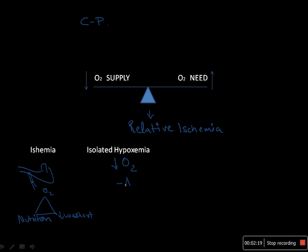In isolated hypoxemia, there is only a decrease in oxygen. This can be seen in anemia, where the oxygen-carrying capacity of the blood is decreased, and in chronic lung diseases, where oxygen carried by the blood is decreased. That is why ischemia is more dangerous than isolated hypoxemia — ischemia causes deprivation of all three factors, whereas hypoxemia only decreases oxygen supply to the myocardium.